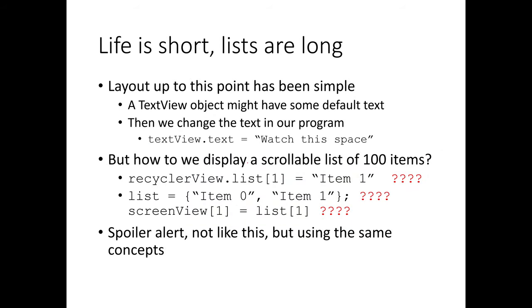Life is short, lists are long. When you have a text view, there's a property called text and you assign a string to it — what could be easier? But a RecyclerView has a list of things. You might think: just grab the RecyclerView and there's some property like list, and assign strings to it like an array. This is not how things work. I'm going through this because I want you to feel confused at first and struggle with the concept of what we're actually doing.